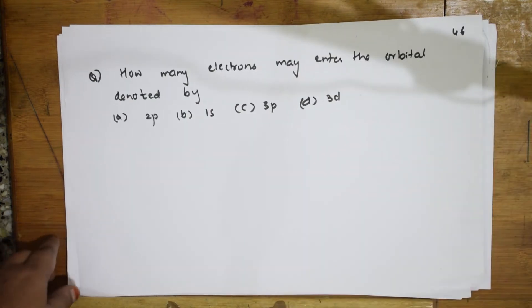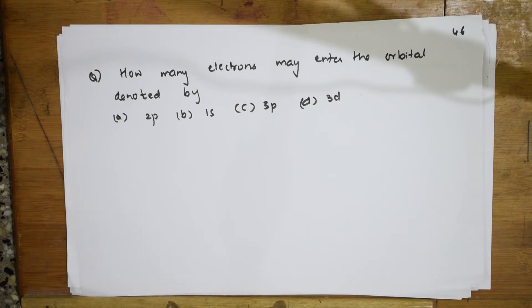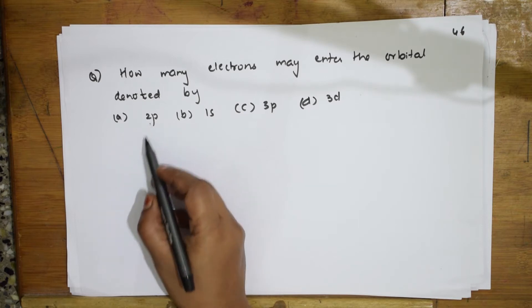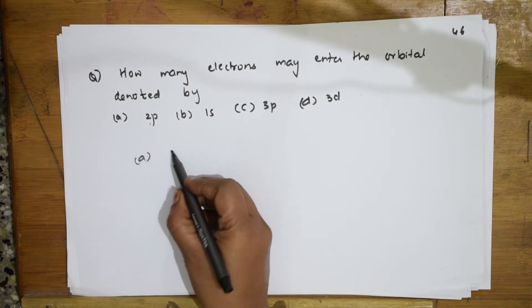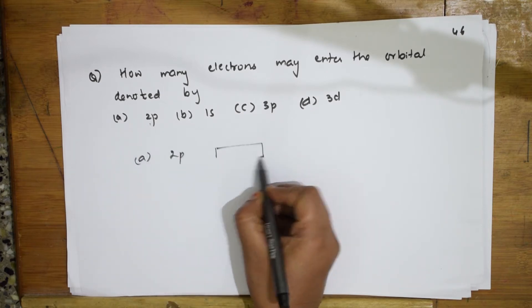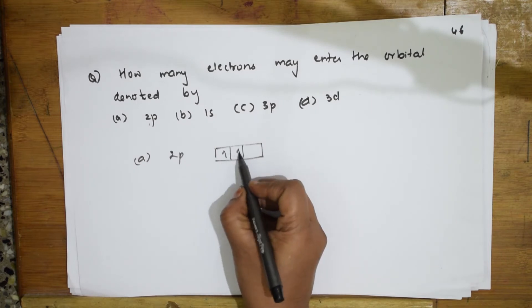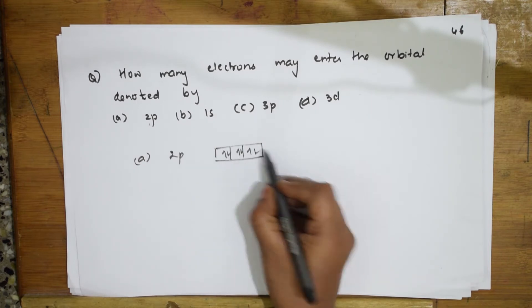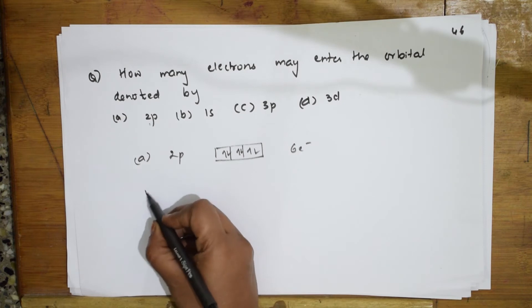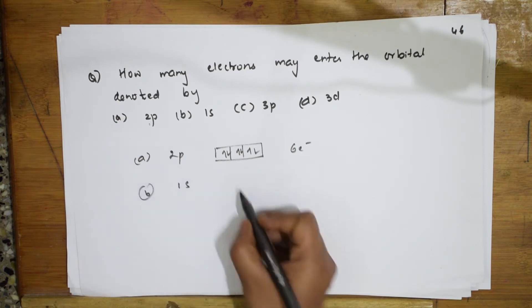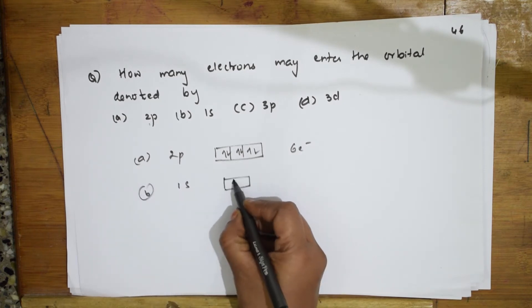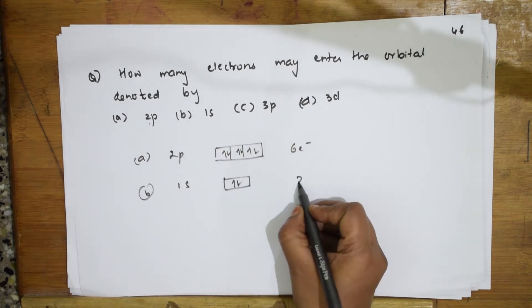How many electrons may enter the orbital denoted by the following? For 2P: P has 3 boxes. Fill according to Hund's rule — 6 electrons. For 1S: S has 1 orbital with 2 spin states, so 2 electrons.